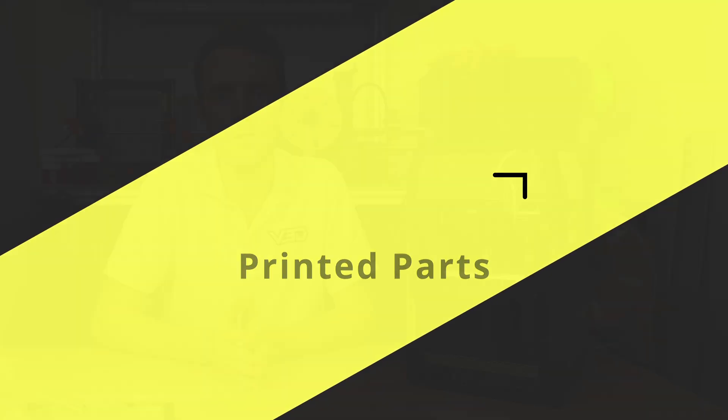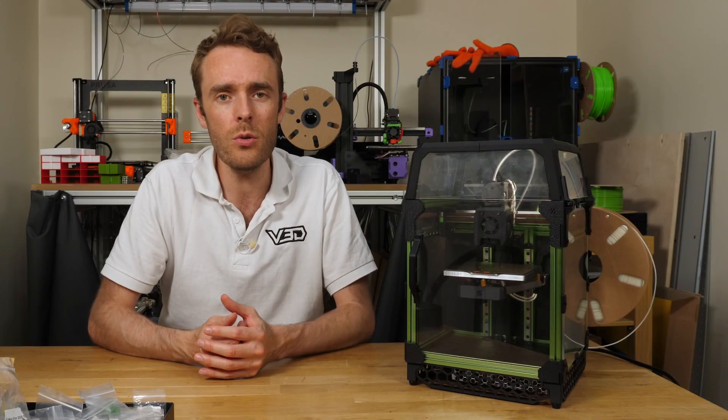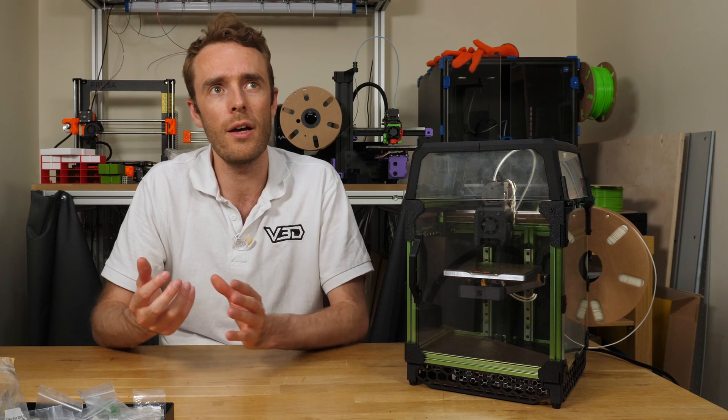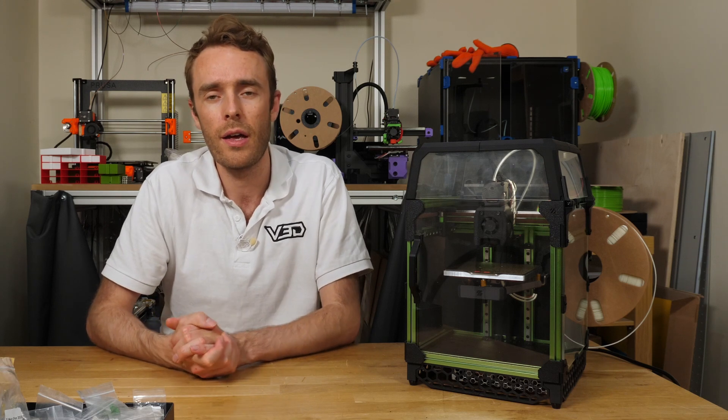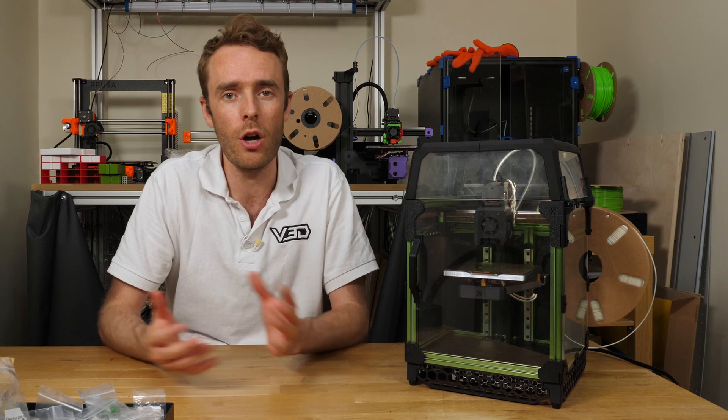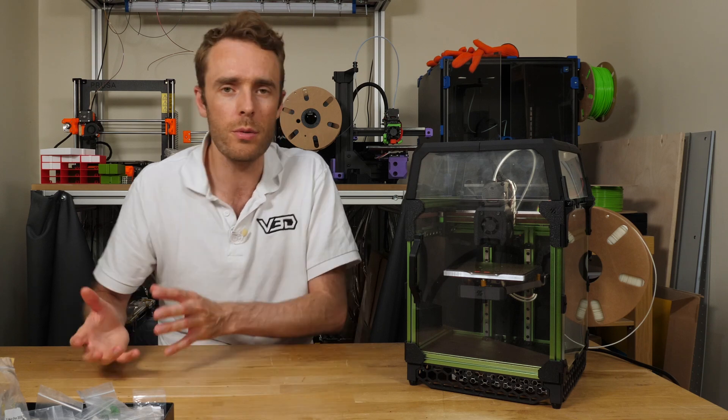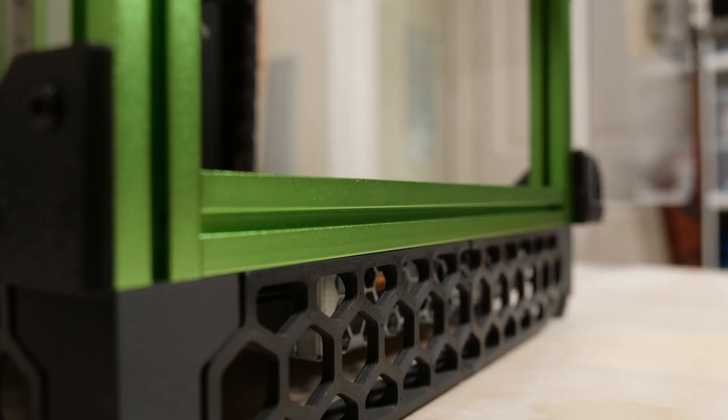All of the Voron Design 3D printers are designed to be enclosed, and therefore will require ABS 3D printed parts. ABS is quite challenging to print, especially on most open 3D printers. I don't mean open source, I mean open as in not enclosed in a box.